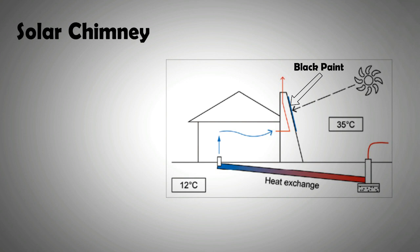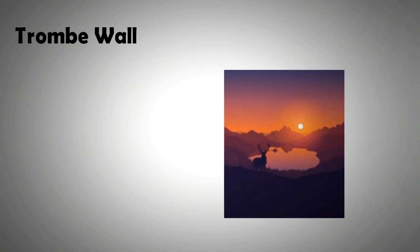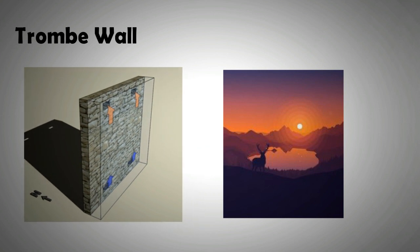The second feature that we will discuss in this video is called a trombe wall. It is used for heating buildings and making the most out of the low winter sun in cold climate countries. The idea is to keep a high thermal mass wall or a thick wall behind a glass facade.